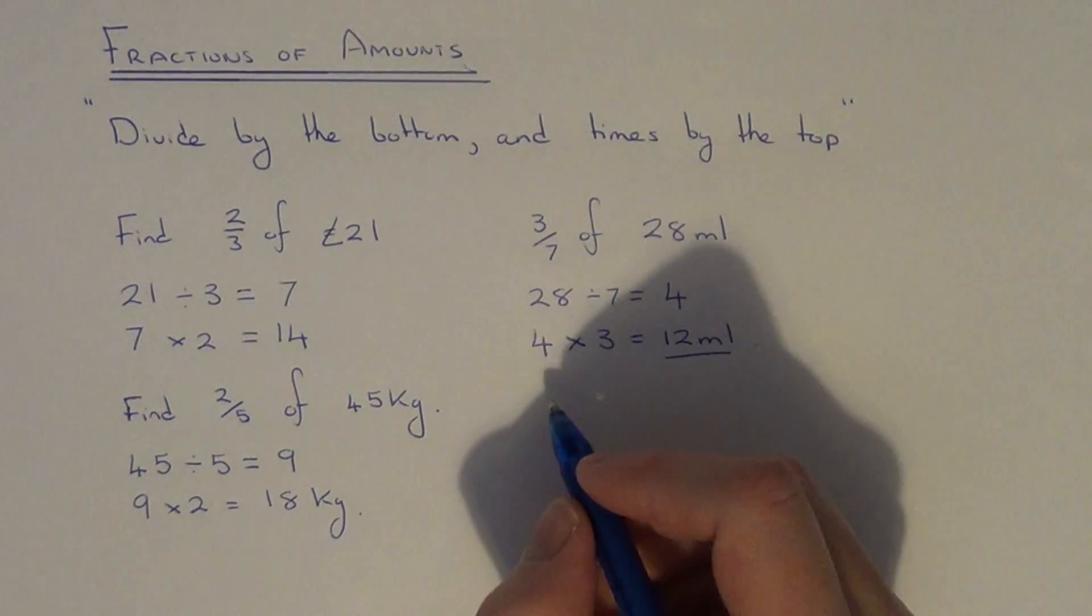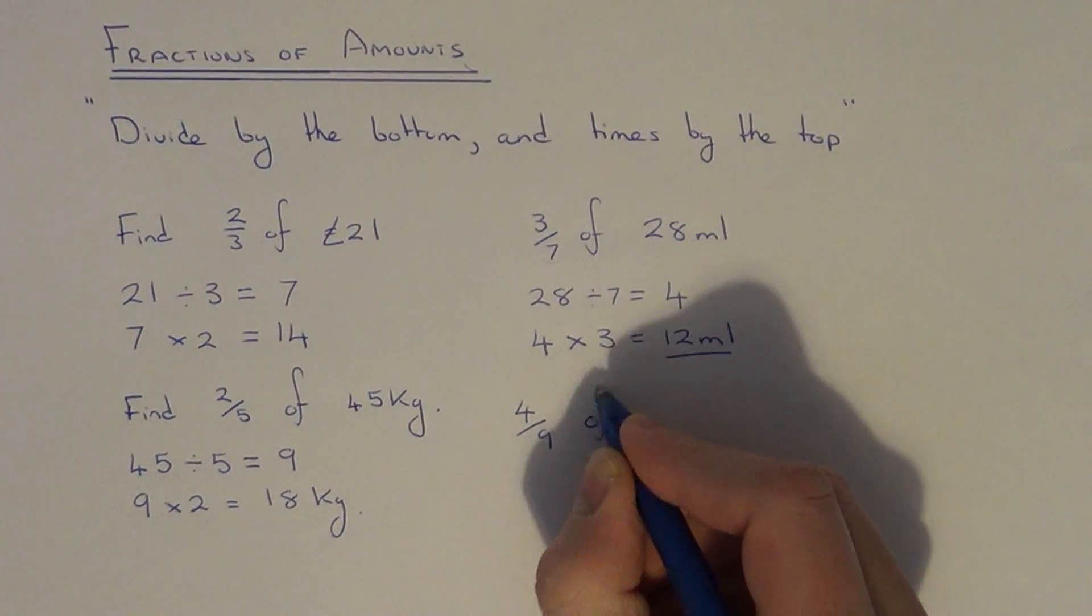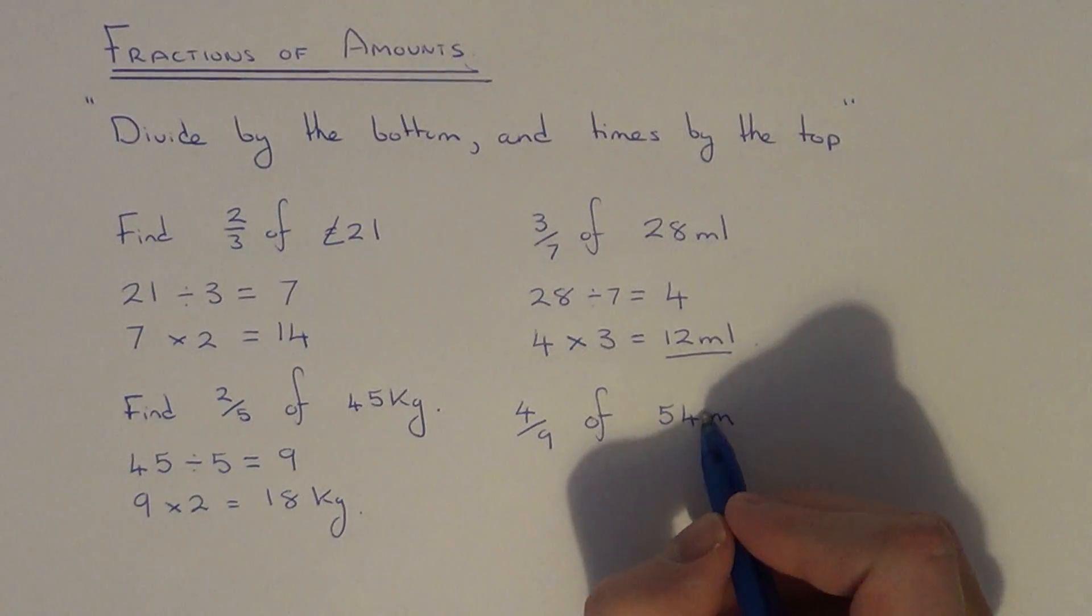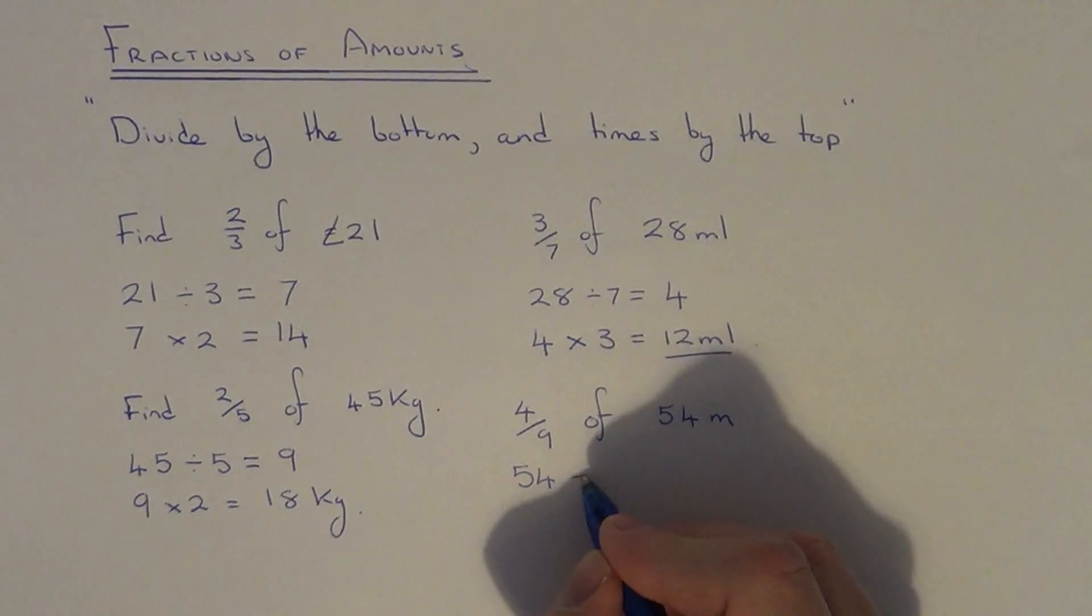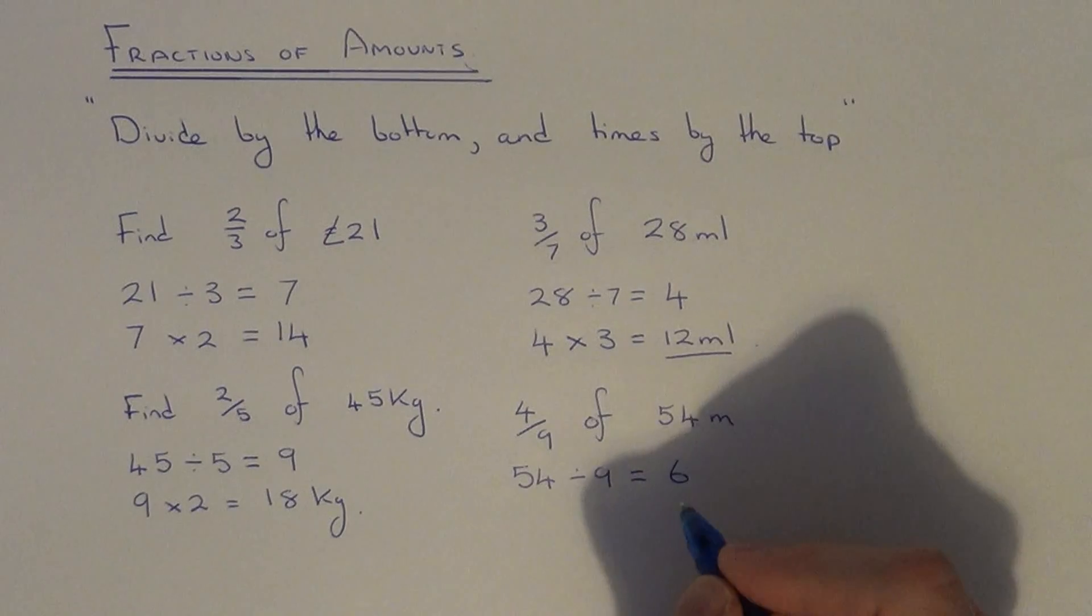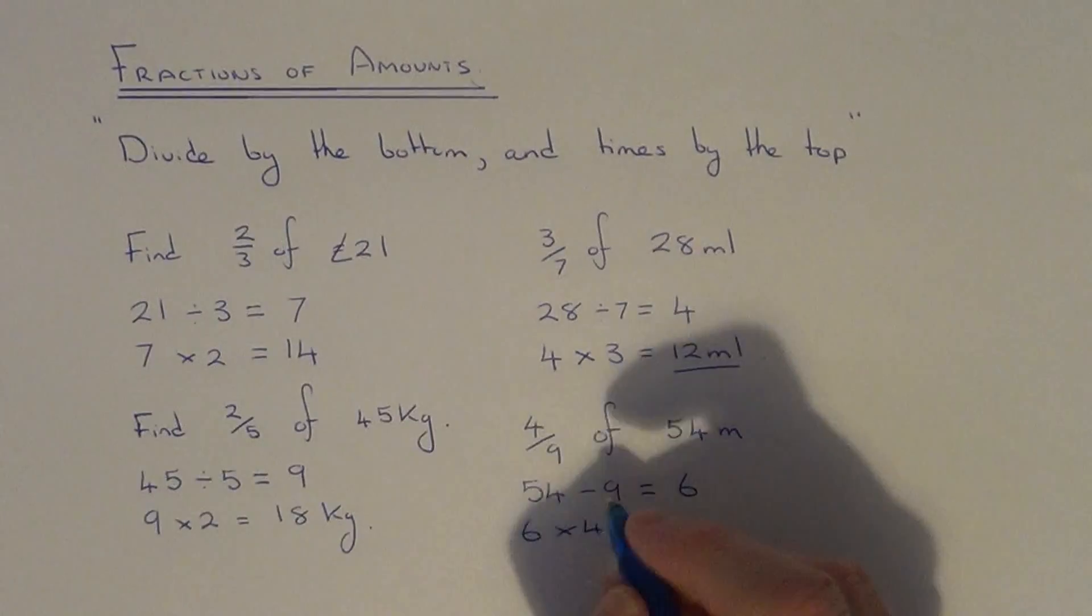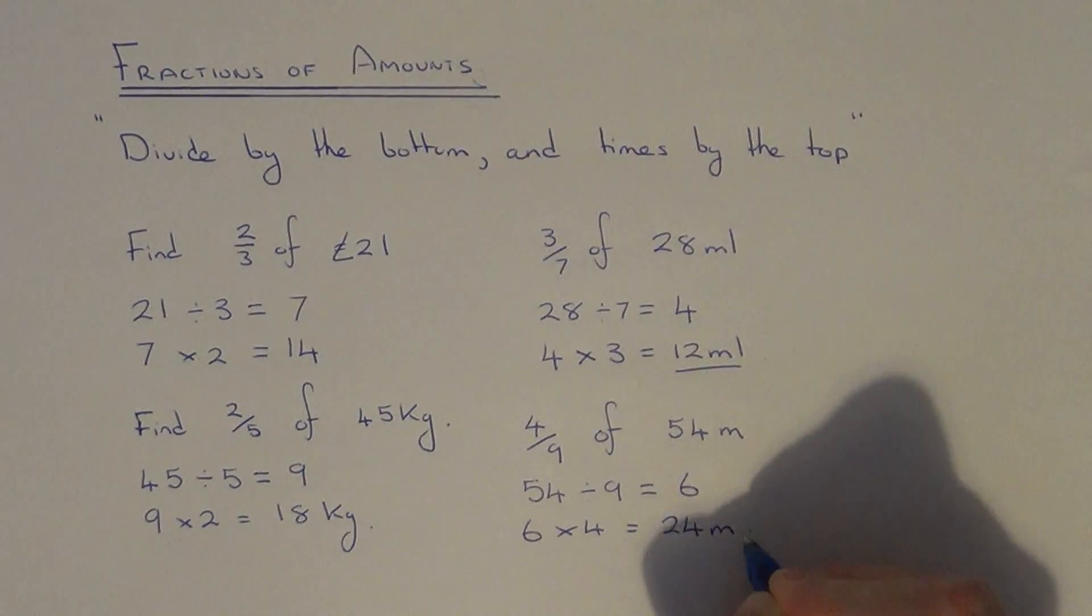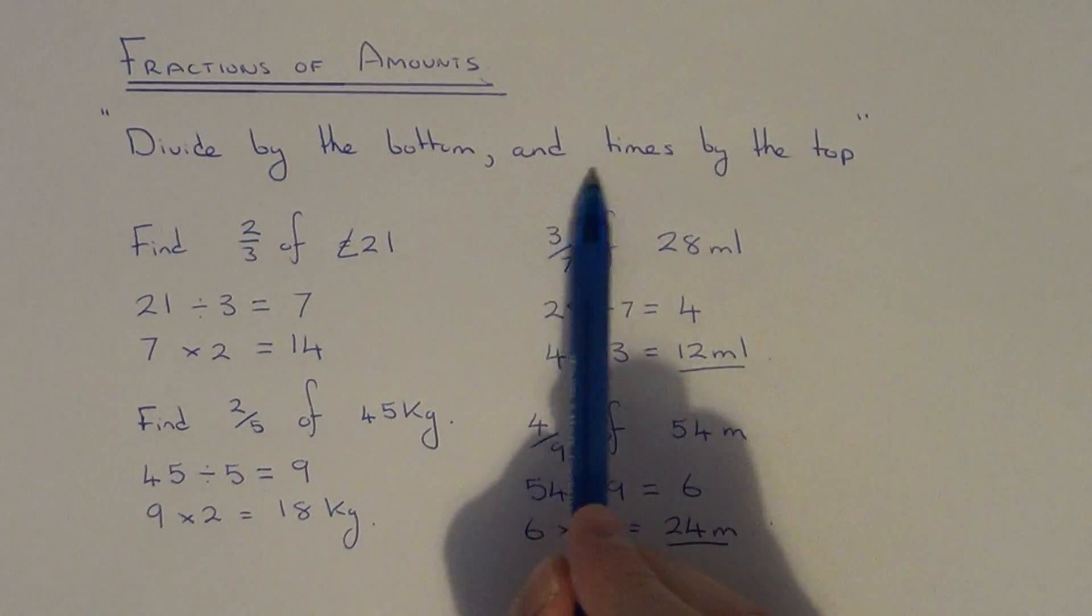Let's do one more example. Let's work out four ninths of fifty four meters. So again put the amount on the next line which is fifty four. Fifty four divided by nine is six. Put this answer on the next line and finally times it by the top of the fraction. Six times four is twenty four. So all you need to do is remember the rule divide by the bottom and times by the top.